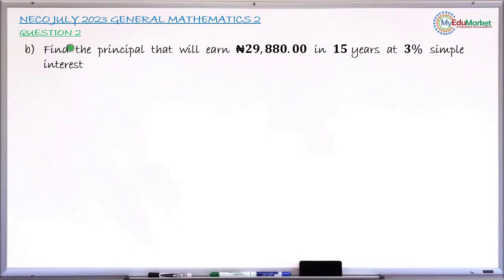This is question 2B from July 2023 NECO General Mathematics. The question is finding the principal that will earn 29,880 Naira in 15 years at 3% simple interest.